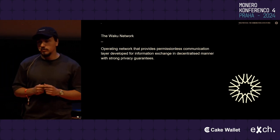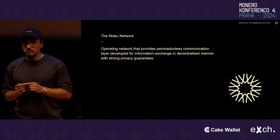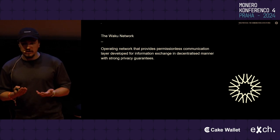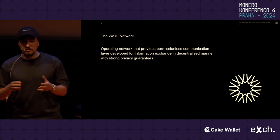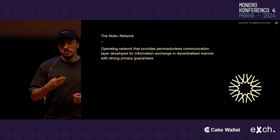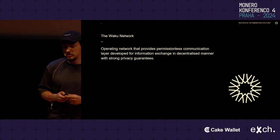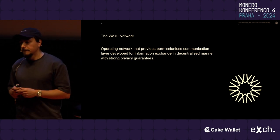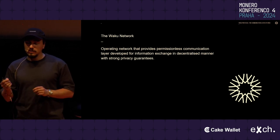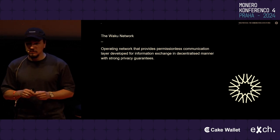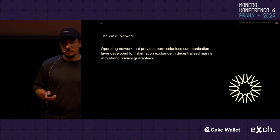I've mentioned Vaku a couple of times — this is what I am building these days. The Vaku network aims to be a communication layer for any Web3 applications. It's already operating, with around 500 nodes or even more. The stats are open — if you run your own node, you can see the network, how much data is exchanged, and how many nodes are there. We provide a permissionless communication layer so that any application or infrastructure component can use it for exchanging data between points A and B.